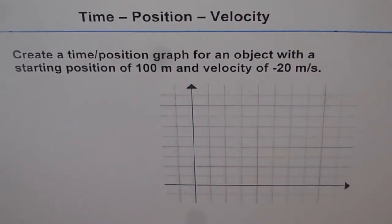It means that the object is going to start 100 meters away from origin and as the time goes by, the object approaches. That means the distance decreases by 20 meters every second. So that is how we need to understand this question.